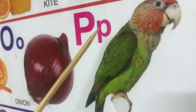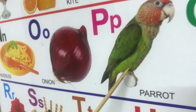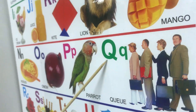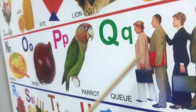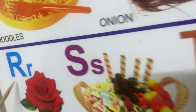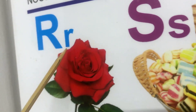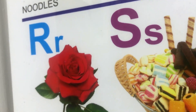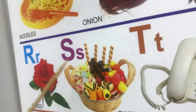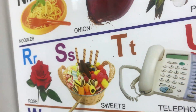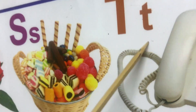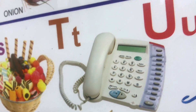Capital P, small p. P for parrot. Capital Q, small q. Q for queen. Capital R, small r. R for rose. Capital S, small s. S for sweeps. Capital T, small t. T for telephone.